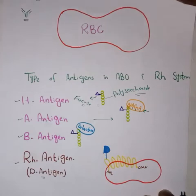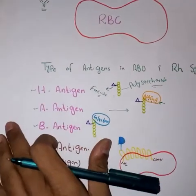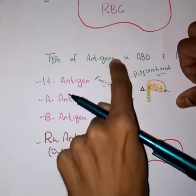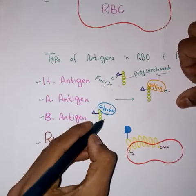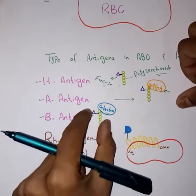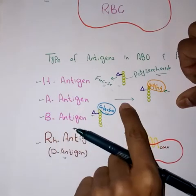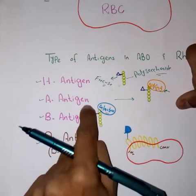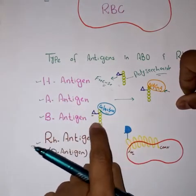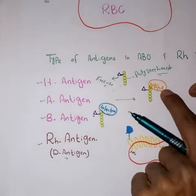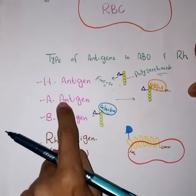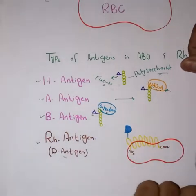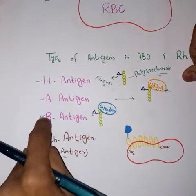Similarly, instead of NAGA, if we place galactose on this H antigen — this polysaccharide chain with the fucose sugar is collectively H antigen — but if we place galactose over this polysaccharide chain, now this antigen will not be called A antigen; it will be called B antigen. So if NAGA is present, it is called A antigen; if galactose is present, it is called B antigen. H antigen, A antigen, and B antigen — clear.